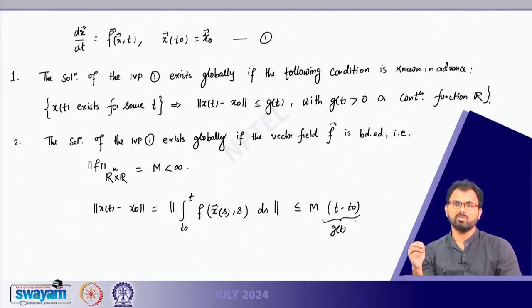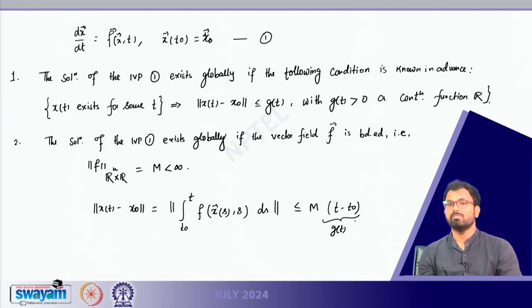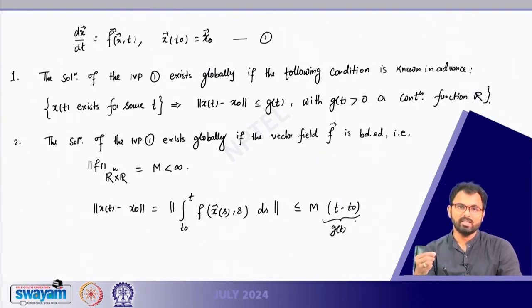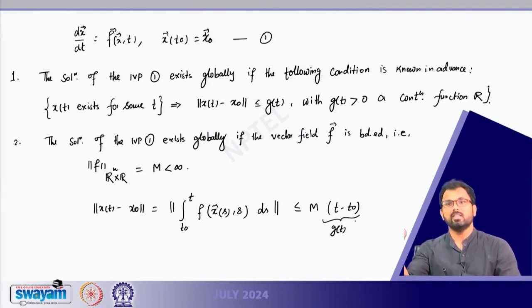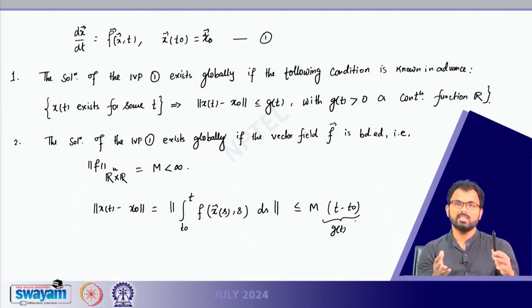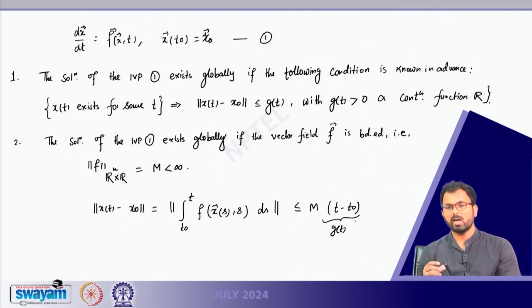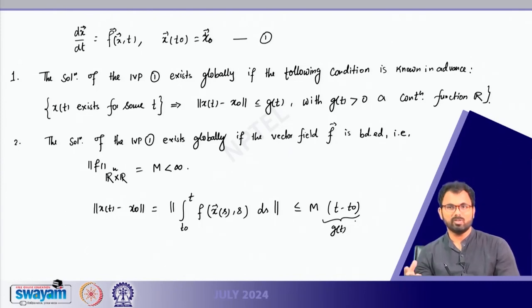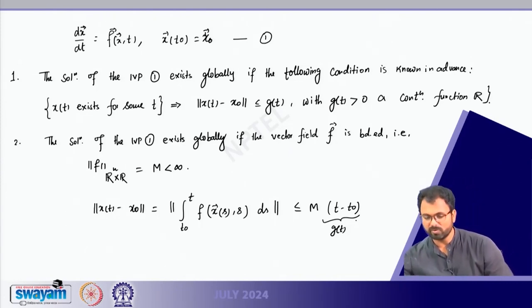So you have x(t₀) equals x₀ initially. Now, instead of x(t₀) equals x₀, you perturb the value by some small number. Then how will the solution change? Whether your solution will still agree with the actual solution, or would it change — and if it changes, how much will it change? There is a direct link between the solution and the initial condition. I will mention one or two theorems which tell you how perturbing the initial data will give a different or same solution.